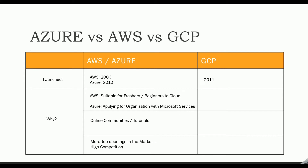In terms of job market demand, AWS and Azure have a high upper hand. But high demand isn't always a good thing — if a particular skill is in demand, the competition will also be high. If you are interested in specialized fields like big data and machine learning in the cloud, then consider looking at GCP.